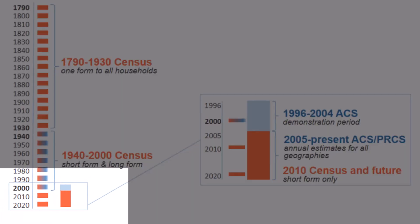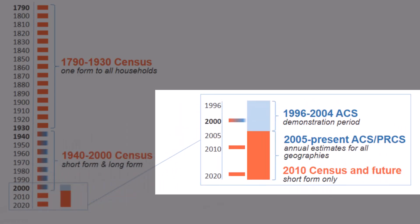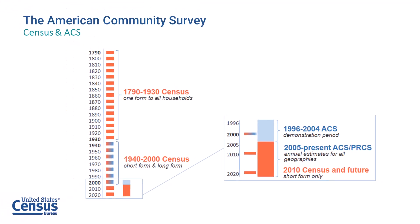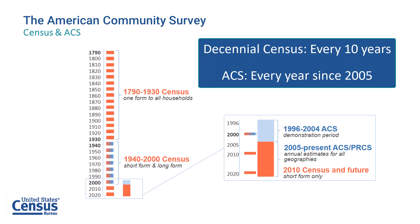In the early 1990s, demand from a wide variety of users for current, nationally consistent data led federal government policy makers to consider the feasibility of collecting social, economic, and housing data continuously throughout the decade. After a period of testing, the ACS was fully implemented in 2005 and began collecting data every year. The Puerto Rico Community Survey, or PRCS, is the equivalent of the ACS in Puerto Rico. Since 2010, the decennial census is now only a short form that households can complete by mail and now online, because the ACS now collects information each year that was once collected by the long form each decade.